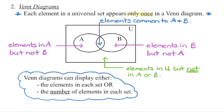Within each diagram, we can either list all elements within each set or write the number of elements that occur within each set. Depending on what the question is asking, you're either going to list the elements separated by commas, or just give the number of elements within that region.